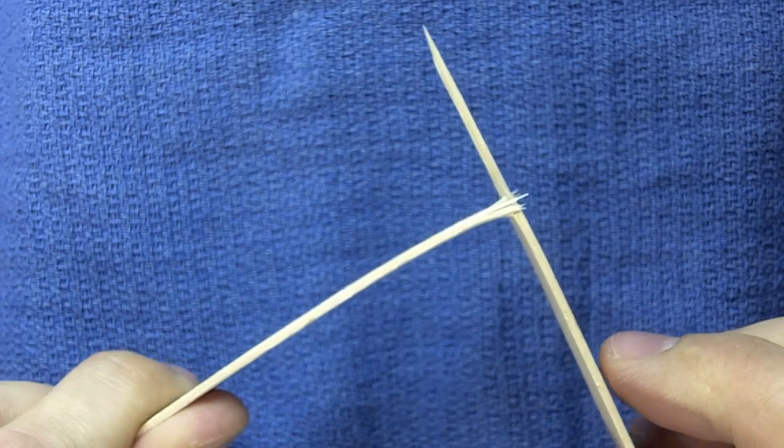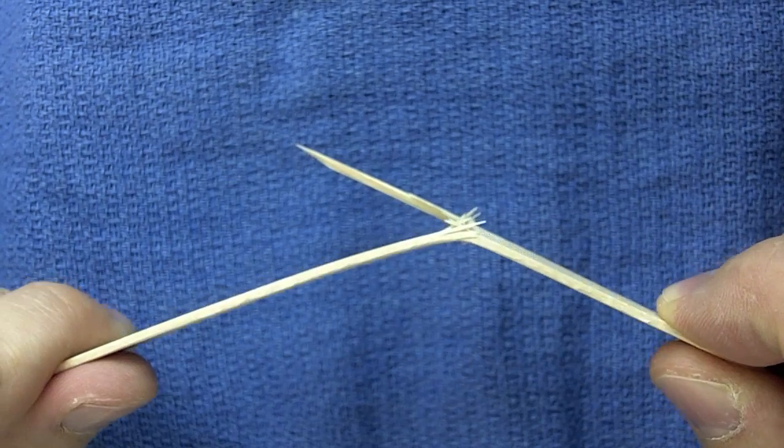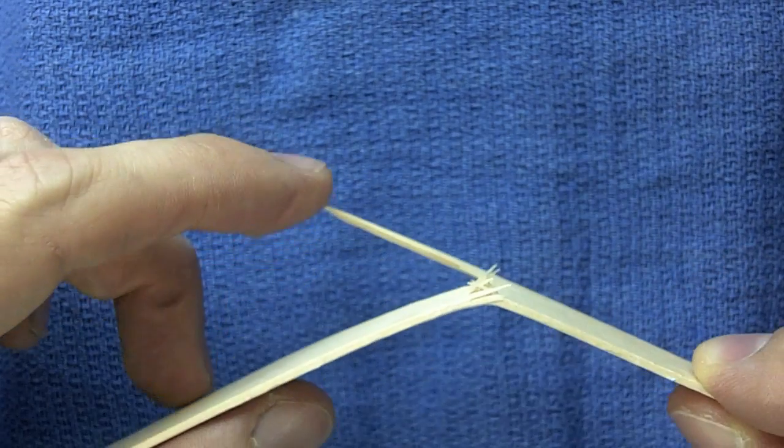In a child's elbow fracture, this is exactly what happens. When the bone breaks, shards of sharp bone are created, just like you see here in the wood.